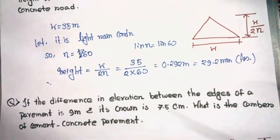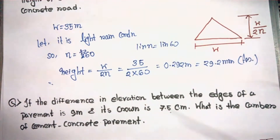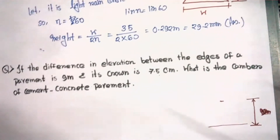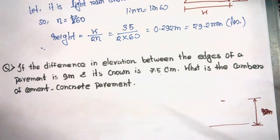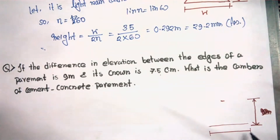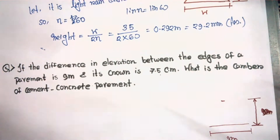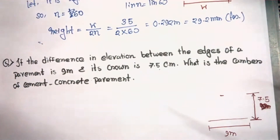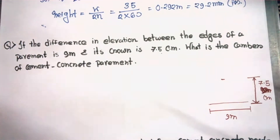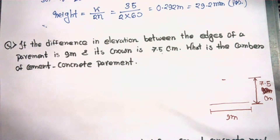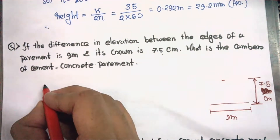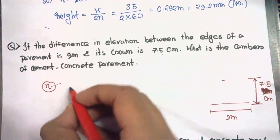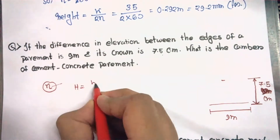Moving on to the next question: if the difference in elevation between the edges of a pavement is 9 meters and its crown is 7.5 centimeters, what is the camber of the cement concrete pavement? The difference in elevation between the edges is 9 meters, and the crown distance is 7.5 centimeters. We have to find the value of the camber, that is, the value of n. Using the formula, height h = w / 2n.